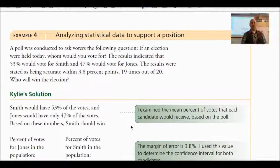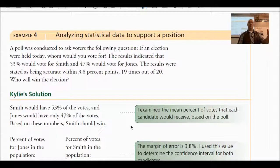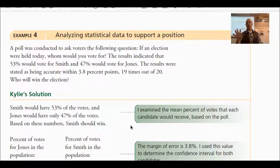Let's take a look at example four: analyzing statistical data to support a position. This one's about a poll conducted to ask voters: if an election were held today, whom would you vote for? The results indicated that 53% of the vote was for Smith and 47% would vote for Jones. You might stop right there and just say Smith's going to win. But the results were stated, because this was a sample, as being accurate within 3.8 percentage points, 19 times out of 20.